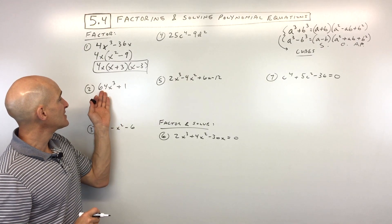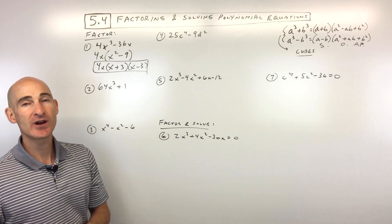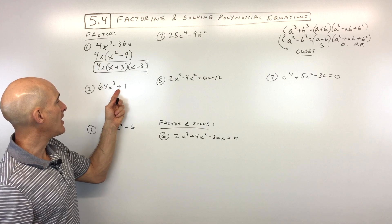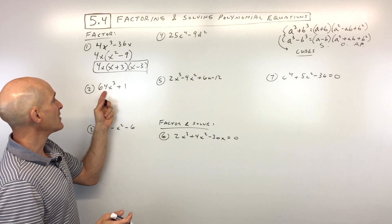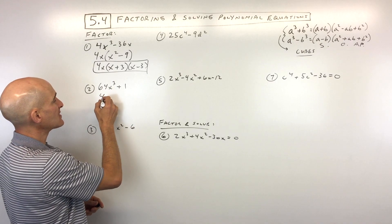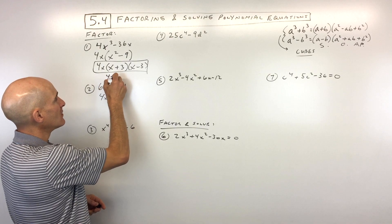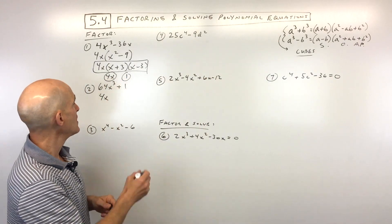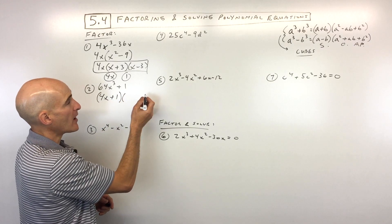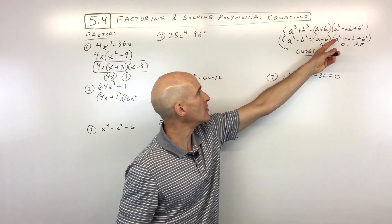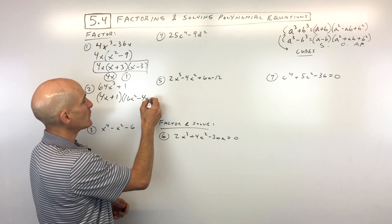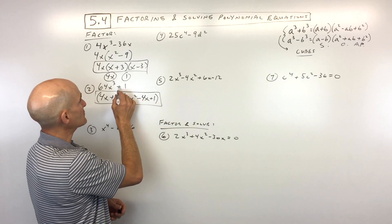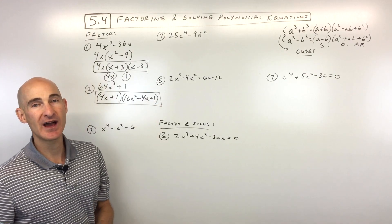Practice problem 2: factor 64x cubed plus 1. There's no greatest common factor, but we have a sum of two perfect cubes — the cube root of 64x cubed is 4x, and the cube root of 1 is 1. So a equals 4x and b equals 1. Expanding with the sum of cubes formula: 4x plus 1 times 16x squared minus 4x plus 1. Using SOAP: same sign adding, opposite subtracting, always positive for the last term.